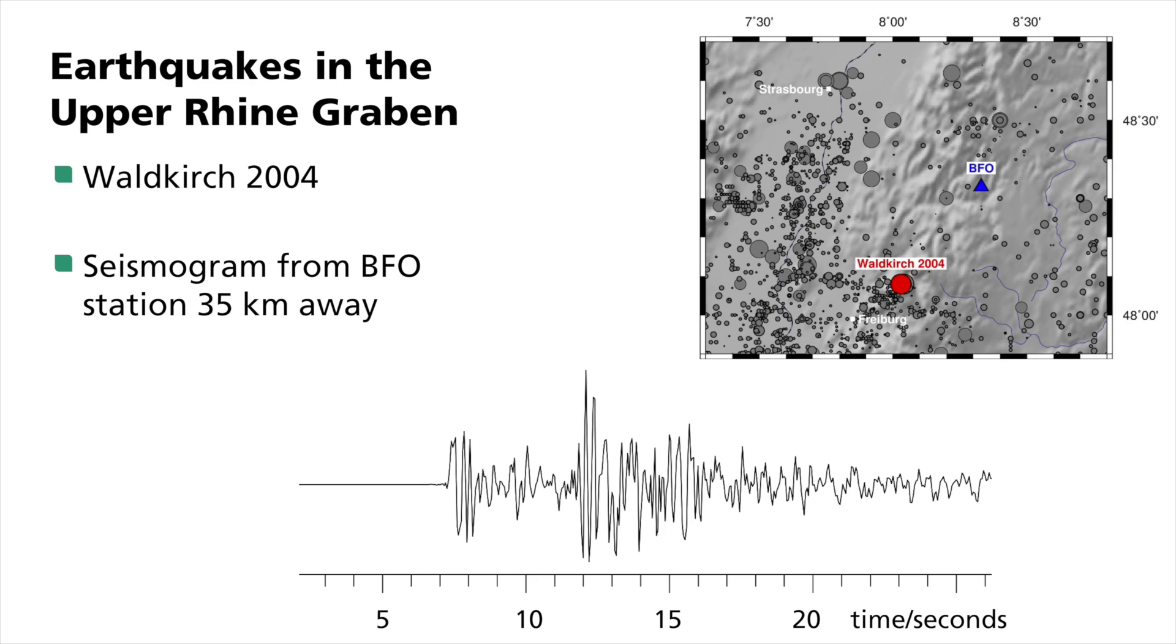Earthquakes radiate elastic waves that travel along the earth's surface or through the interior of the earth. Seismometers record the resulting ground motion all over the earth. Information on how the waves propagate and how they change helps us to learn more about the structural configuration of what is under the surface. Important observations in this case include the arrival times of seismic waves. Shown here is a seismogram of the Waldkirch earthquake, which was recorded at the BFO seismic observatory in the Black Forest 35 kilometers away. You can clearly see the initial onset of the seismic p-wave approximately 7 seconds after the earthquake, and the late arrival of other wave types, such as the S-wave.